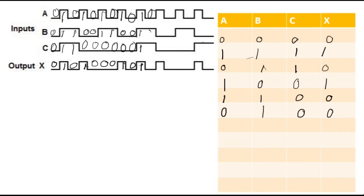Continuing: 0,1,1 is giving you 0 — we already have 0,1,1→0, no need to rewrite. 1,0,0 is giving you 1 — already done. 0,0,0 is giving you 0 — already done. 1,1,0 is giving you 0 — already have it. 0,1,0 is giving you 0 — we have that entry as well, so no need to rewrite.